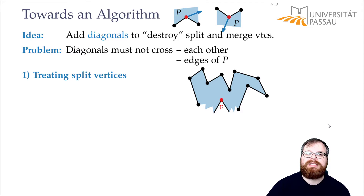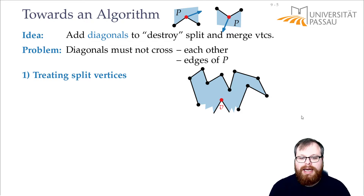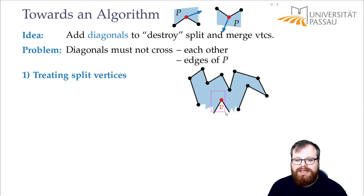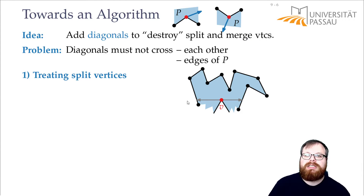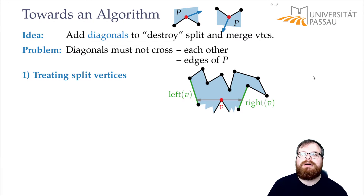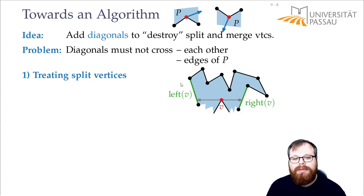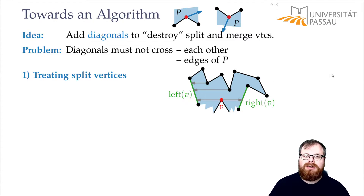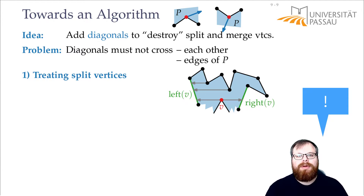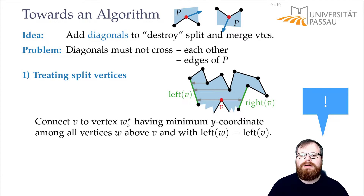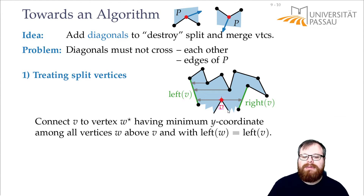Let's first have a look at a split vertex. How could we treat a split vertex? For example, we could have a polygon that looks like this. How can I now find a good diagonal that I can add? I cannot just take any, because some would not be fine. How we want to do this is: we take our split vertex and we look to the left and to the right, adding a horizontal segment to each side. This gives us the left and the right edge of V. If we look at all the other vertices, some of them have the same left edge as V. Now these are good candidates to connect our vertex V to. We will choose the lowest one — the vertex W* that has the minimum y-coordinate among all vertices that lie above V and have the same left edge. So in this case, we connect it to that vertex.